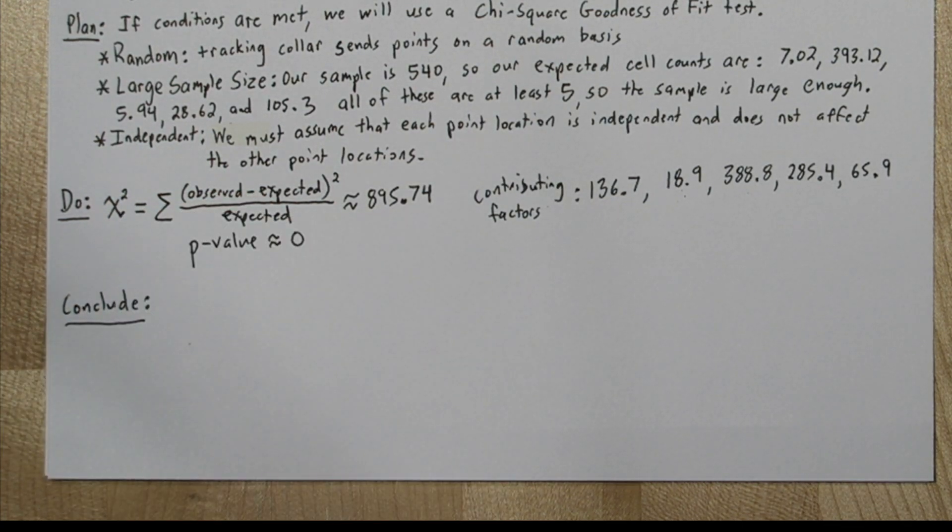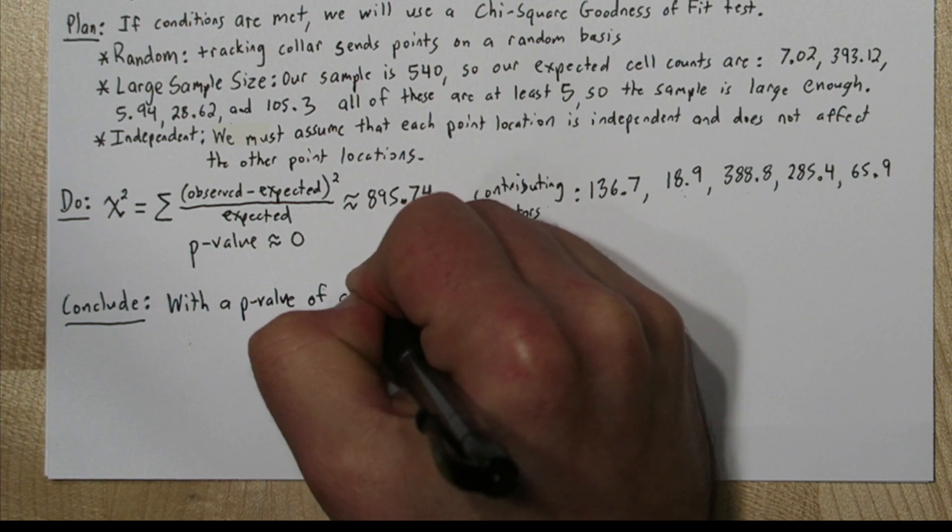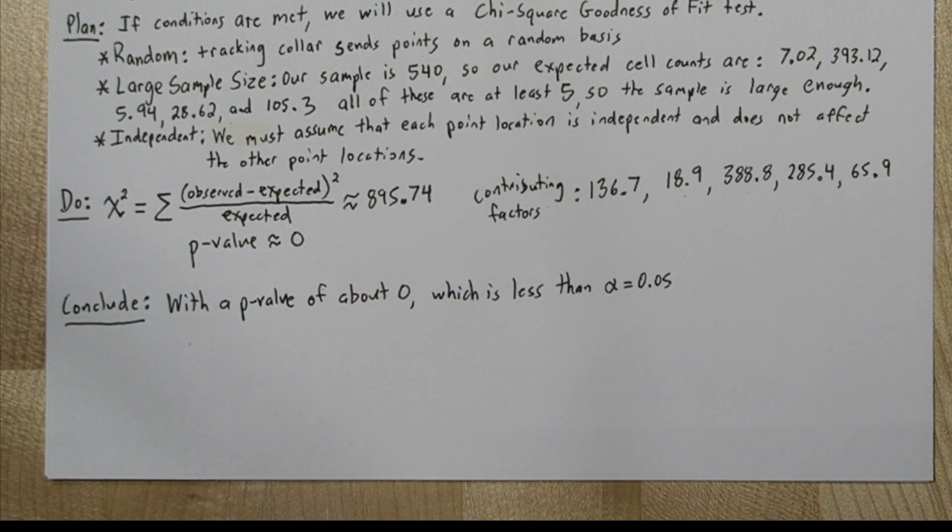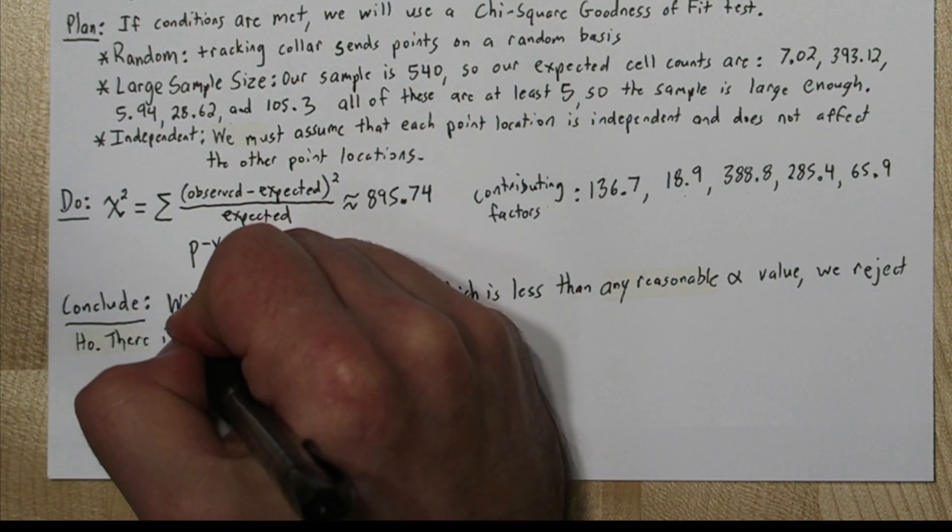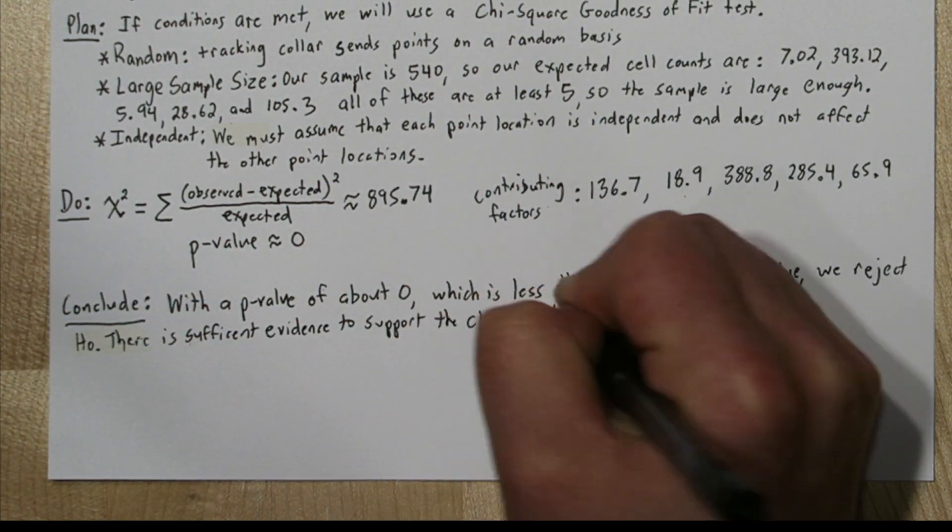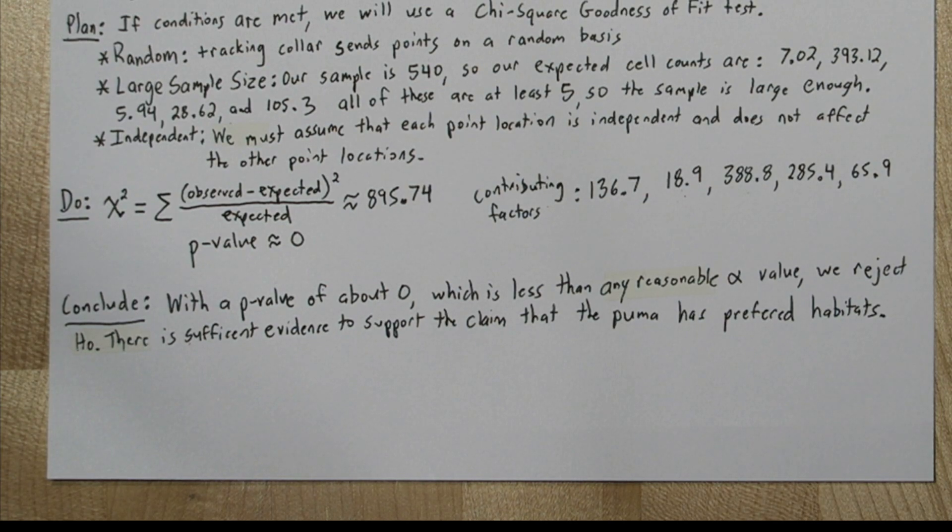Now we're ready to conclude. So with the p-value of about zero, which is less than any reasonable alpha value, we reject the null hypothesis. There is overwhelming evidence to support the claim the puma has preferred habitats.